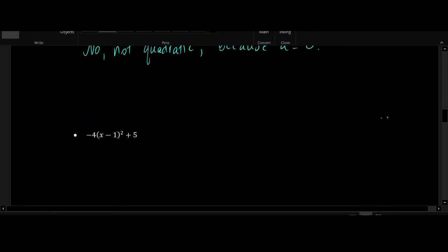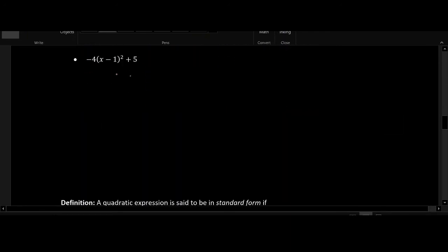Finally, let's try it with one more example. Here we have -4(x - 1)² + 5. Let's see if we can rewrite this into the appropriate form. Now I'm going to follow PEMDAS. And the first thing that I'm going to do is work on (x - 1) squared.